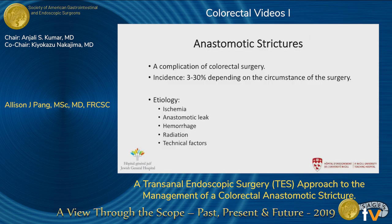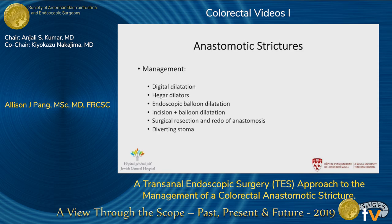Anastomotic strictures are known complications of colorectal surgery and their incidence is very much dependent on the circumstances of the surgery itself. Etiologies include ischemia, anastomotic leak, hemorrhage, radiation, and technical factors. The management of these anastomotic strictures includes digital dilatation, the use of Hagar dilators, endoscopic balloon dilatation as long as the guide wire can enter through, surgical resection and redo of the anastomosis via transabdominal surgery, or the creation of a diverting stoma.